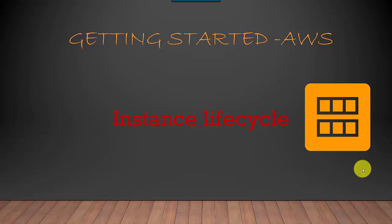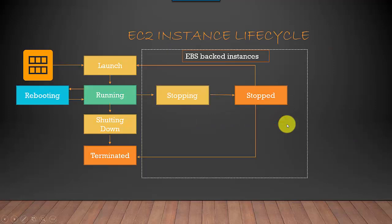In this video we'll talk about the EC2 instance lifecycle. I've got a quick diagram to show you the various lifecycle states. You select an AMI, define the launch configuration, and launch your instance. The first state is the launch state, and from there it starts coming up.